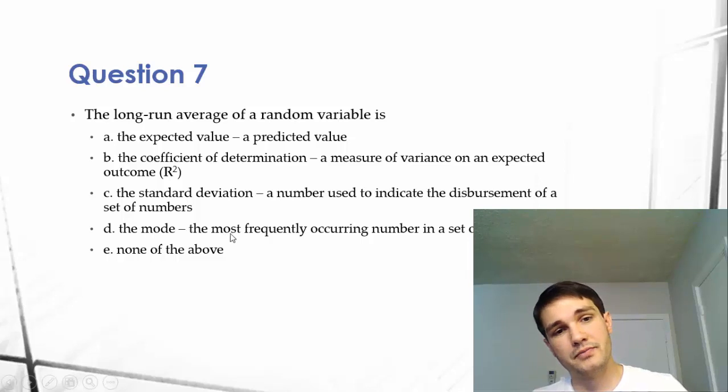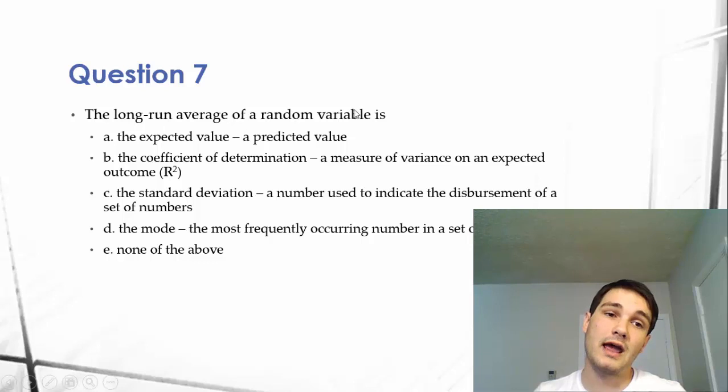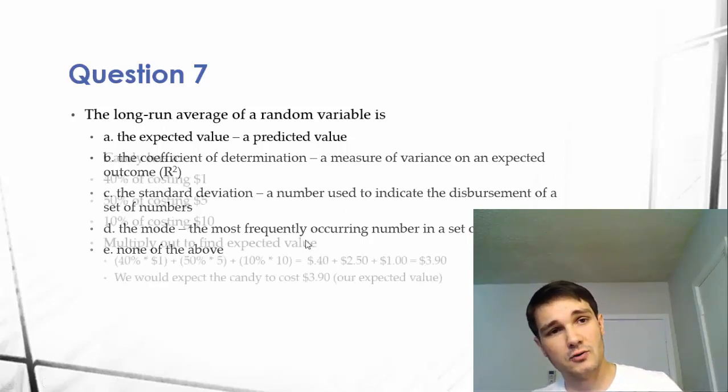D, the mode, this is the most frequently occurring number in a set of numbers. So again, this is not the long-run average, even though it is a type of average. So it's important to know your definitions here to get this answer correct.